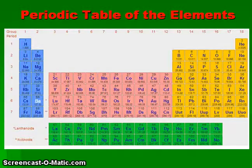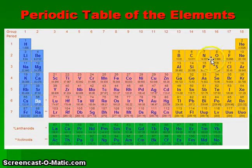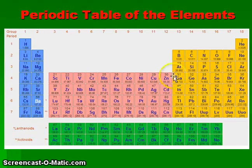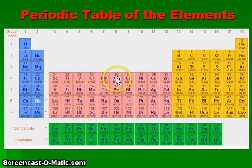Gases take on the shape and volume of the container that holds them. This slide shows the periodic table of the elements. The non-metallic elements are placed in the upper right corner and include elements such as carbon, nitrogen, oxygen, and sulfur. The metallic elements are located on the lower left part of the periodic table and include elements such as iron, nickel, copper, zinc, silver, and gold.